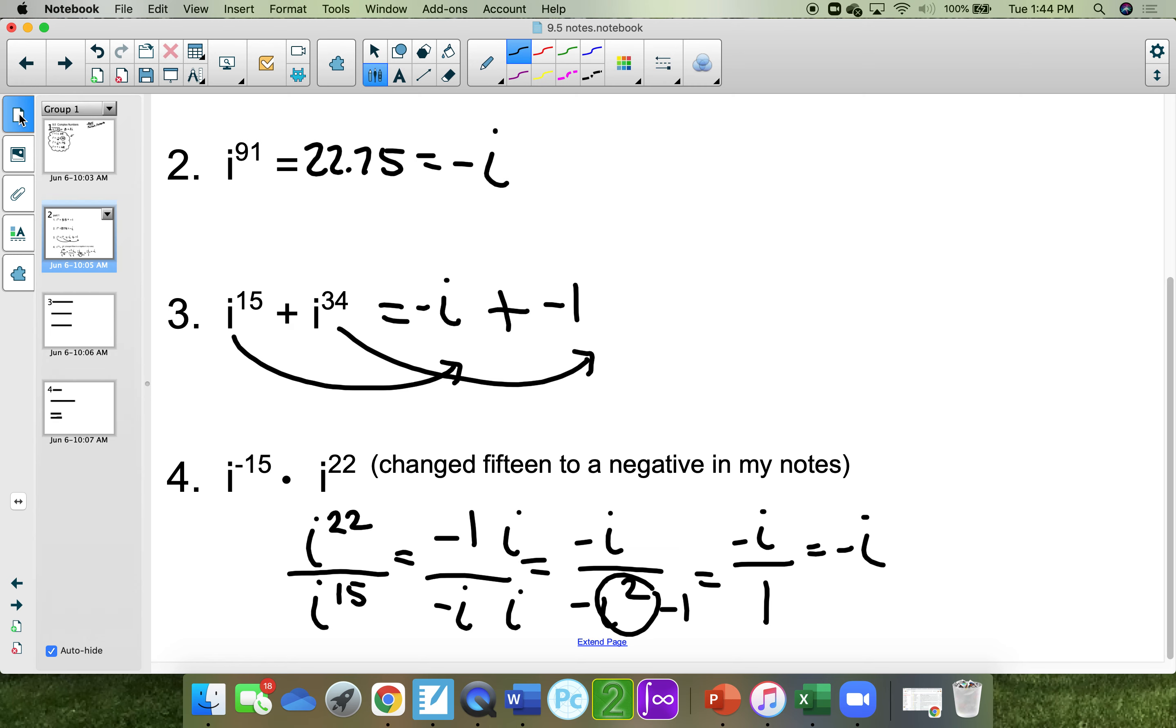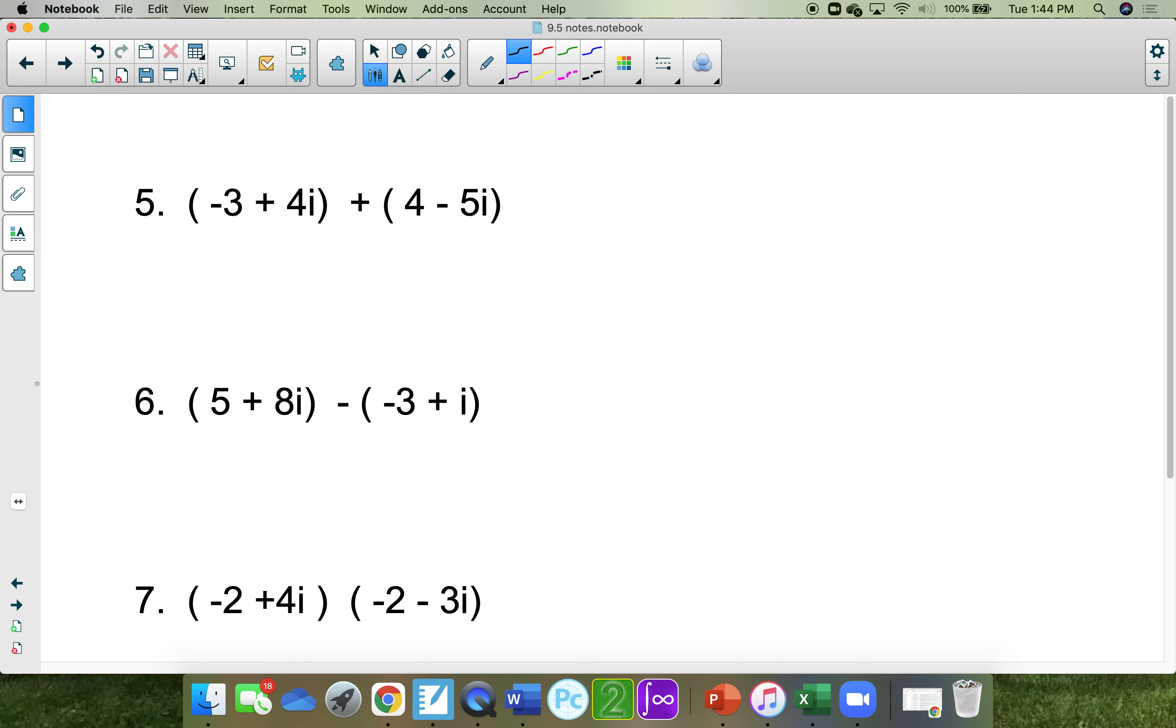Next part, we're going to add complex numbers together. When you add, you put the real parts together. A negative 3 plus 4 is 1, and 4i take away negative 5i is a negative i. When you subtract, you put the reals together. 5 minus a negative 3 is really 8, 8i minus i is a positive 7i. So adding and subtracting.